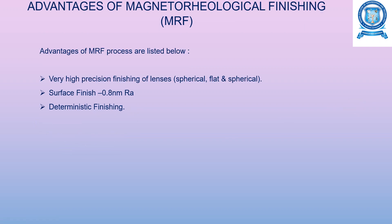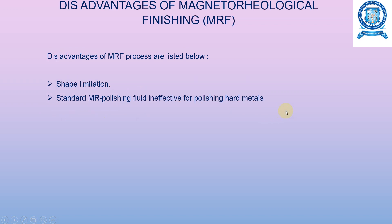The advantages of magnetorheological finishing include very high precision finishing of lenses — both flat and spherical — with a surface finish of 0.8 nanometers. Deterministic finishing is also achievable. The disadvantages include shape limitations and the fact that standard MR polishing fluid is ineffective for polishing hard metals. These are the disadvantages of magnetorheological finishing processes.